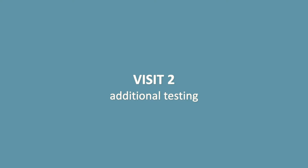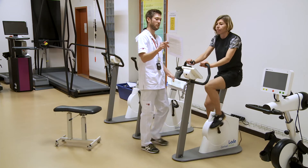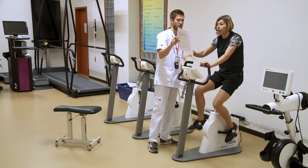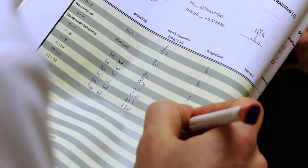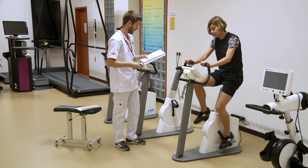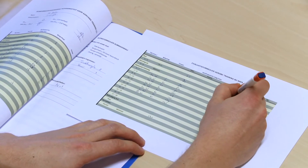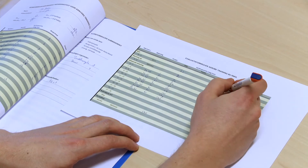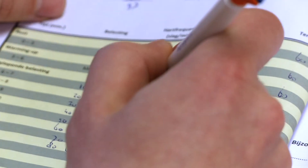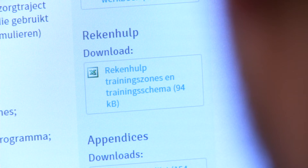Visit 2: Additional testing. During the second visit, the patient undergoes the submaximal exercise test as described in Appendix 2. During testing, complete the submaximal exercise test score form. On the aerobic exercise evaluation form, enter the values before the start of the training program. Following that, determine the heart rate at the anaerobic threshold as described in Appendix 3.